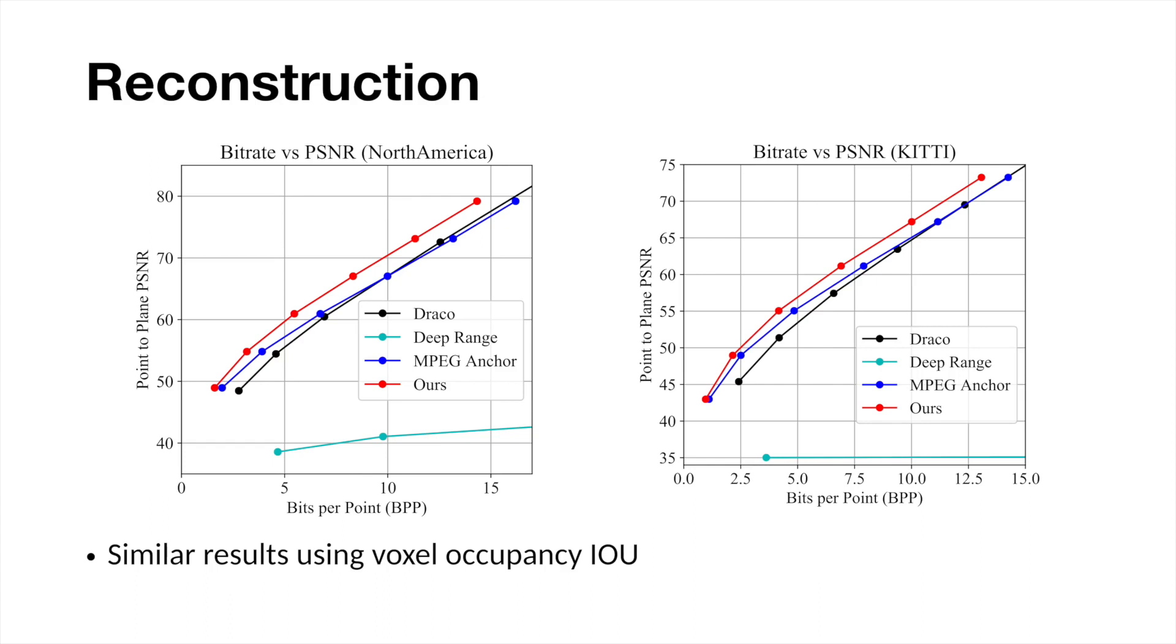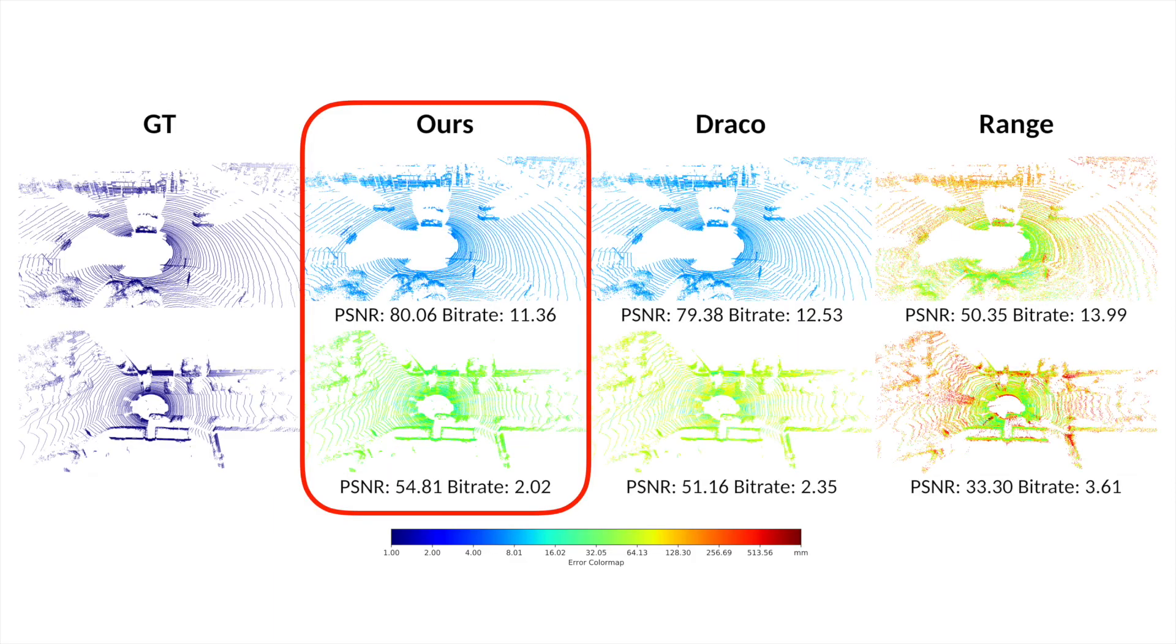Holding reconstruction quality equal, our approach reduces bitrates by 10-20% compared to previous state-of-the-art methods. Next, we show qualitative comparisons of our method to the ground-truth uncompressed point cloud and baselines. At similar bitrates, our method has lower error in all areas of the point cloud.